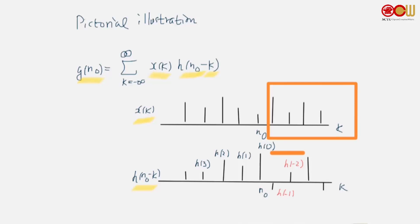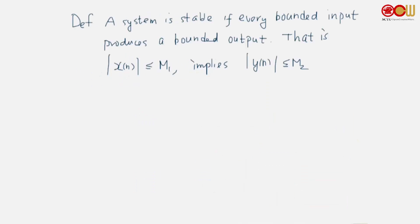We say a system is stable if every bounded input produces a bounded output. That means whenever the absolute value of x(n) is less than or equal to some M1, this implies the absolute value of y(n) is less than or equal to some M2. This is very much like the definition of stability for the continuous time case. And we also call this bounded input, bounded output stability. For example, this is M1 and this is -M1. Then x(n) would only be in this range.